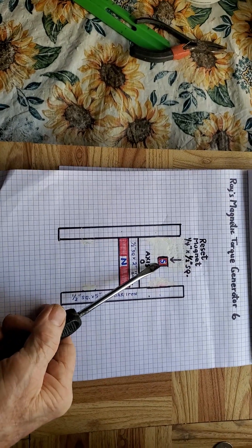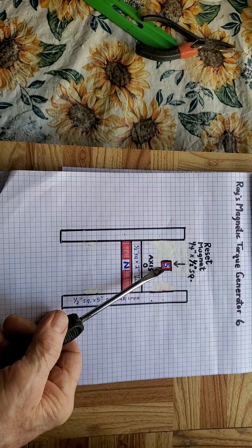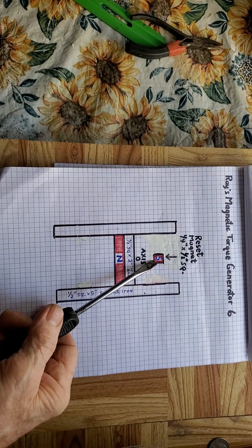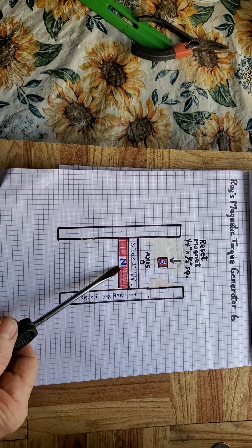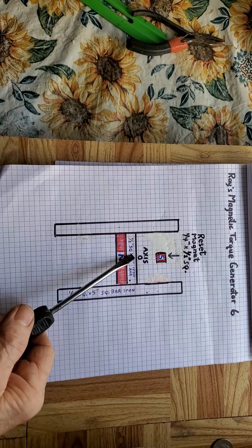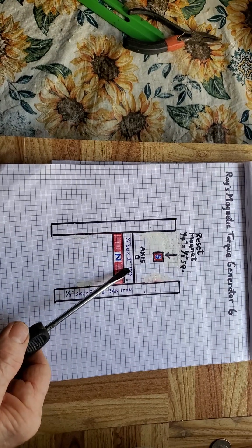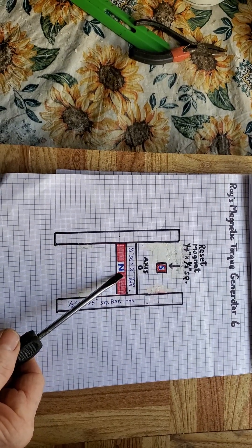Here's the reset magnet, so it will reset on itself. You can watch number 5, this will all make more sense. And then I have a neutral bar coming across here, butted up against the firing power magnet here on the base.